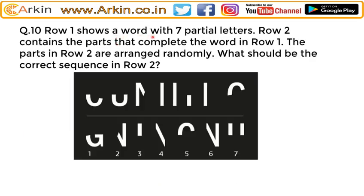Row one shows a word with seven partial letters. Row two contains the parts that complete the word in row one, but the parts in row two are arranged randomly. We have to find the correct sequence in row two so that we get a complete word when the parts are placed into row one.